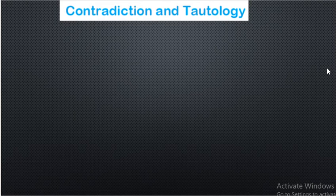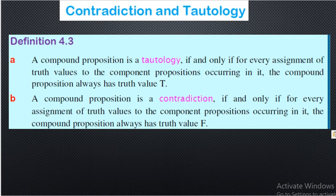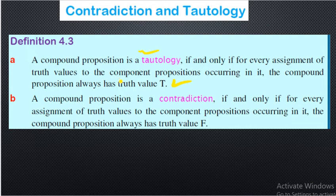Hello, welcome back. In this video we'll be learning about contradiction and tautology — when do we say a given compound proposition is a tautology and when is it a contradiction? The definition says a compound proposition is a tautology if and only if for every assignment of truth values to the component propositions, the compound proposition always has truth value true. If it is always false, we call it a contradiction.